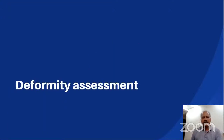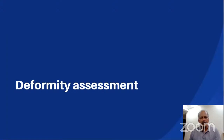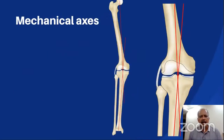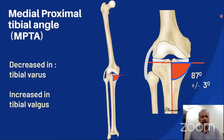The patella should face forward and be positioned in the center of the knee, with a non-overlapping view of the femoral condyles. Once we have a properly done x-ray, the next step is to assess the deformity. The weight-bearing line connects the center of the femoral head to the center of the ankle joint, and it normally passes 2–4 mm medial to the midpoint of the joint. If it passes more than 15 mm medially or more than 10 mm laterally, it is said to be significant varus or valgus respectively.